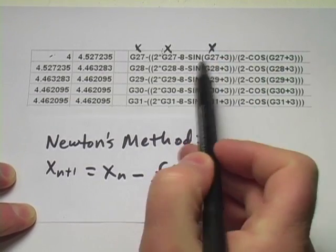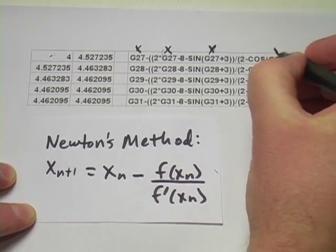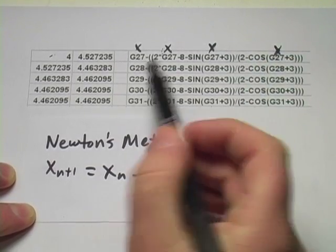So this is really that function, that original function. And then divide it by 2 minus the cosine of x plus 3. So that's my formula.